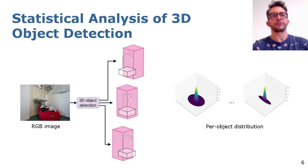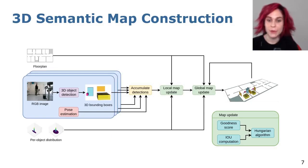Given posed RGB images and a 3D object detector, we construct a metric semantic map to enhance a floor plan. We aggregate consecutive detections into a short-term local map by associating detected objects across different frames using the Hungarian algorithm.